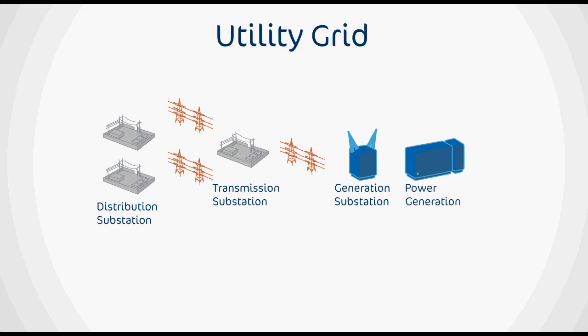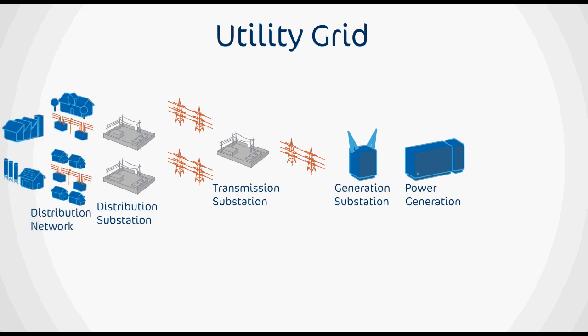A typical utility grid has one or more generation substations interfacing the power plants via step-up transformers. Power is transmitted via the high-voltage grid and several transmission substations to the distribution substations, where the power is stepped down by transformers and delivered to customers. All of this is controlled from one or more dispatching centers.